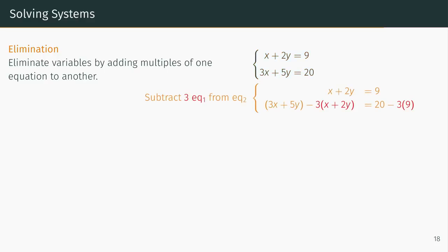In this example, we subtract 3 times the first equation from the second equation, which eliminates x. Then we multiply the second equation by minus 1, so it takes the simpler form y equals 7.